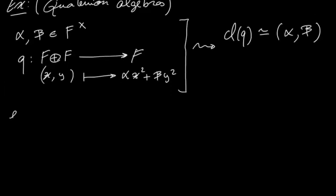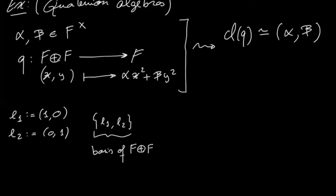So let's suppose that we choose these elements e1 equals 1, 0, so the classical basis for F plus F, and then e2 equals 0, 1. So this is a basis of F plus F, and consequently,